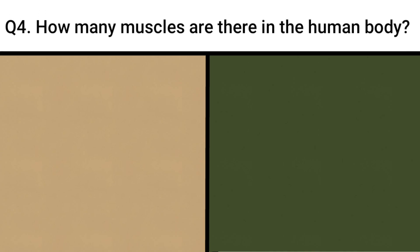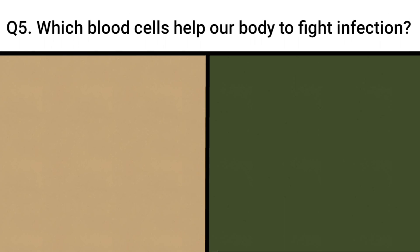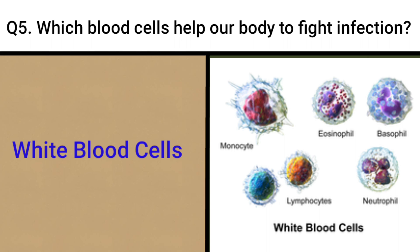How many muscles are there in the human body? 600. Which blood cells help our body to fight infection? White blood cells.